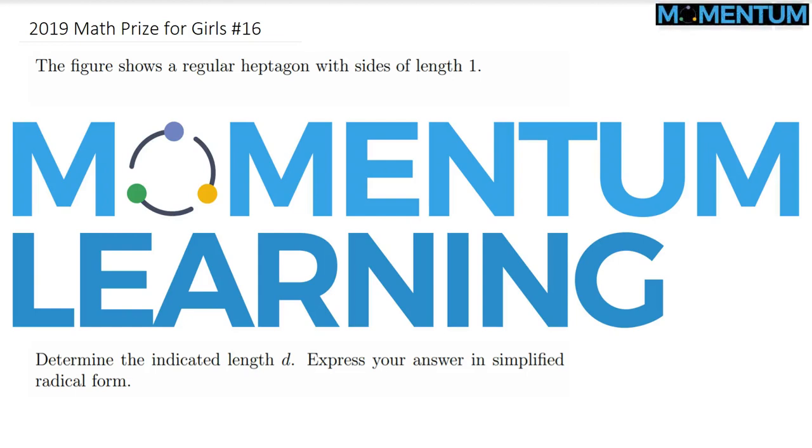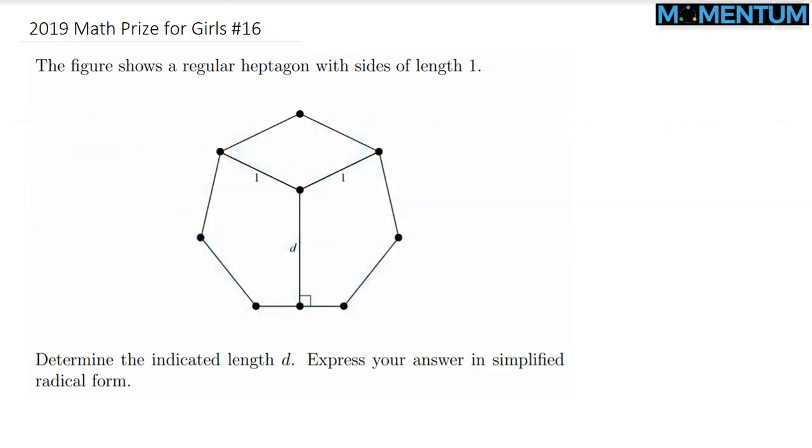This is 2019 Math Prize for Girls problem number 16, and here is a view of this geometry problem. We are given this heptagon, 7-gon, each side of length 1. We would like to determine the length of this given edge over here in the middle.